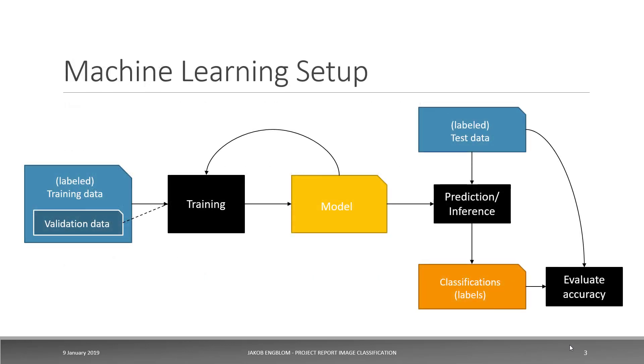The machine learning setup is once again entirely straightforward. I have labeled training data. Some subset of it is used as validation data for the training algorithms, and then we iterate through training until the model is good enough that it makes sense to start using it for prediction or inference. At that point we feed it with labeled test data, we get a set of classifications out of it, and then we evaluate the accuracy by comparing the given known good labels in the test data with the classifications as provided by the model.